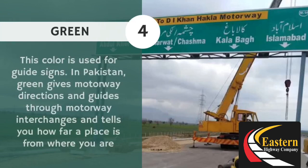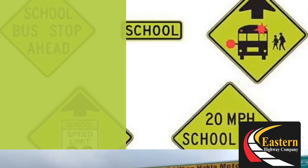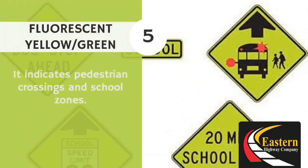Green color: this color is used for guide signs in Pakistan. Green gives motorway direction and guides through motorway interchanges, and tells you how far a place is from where you are.